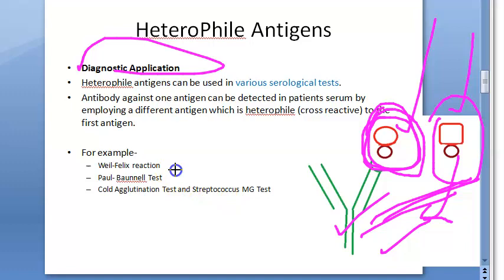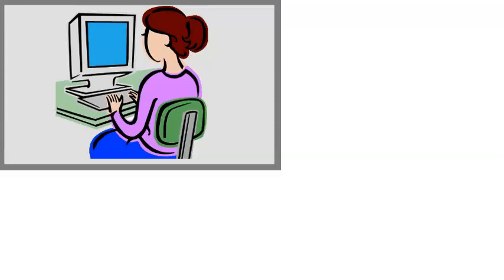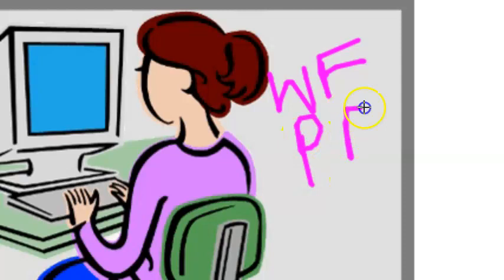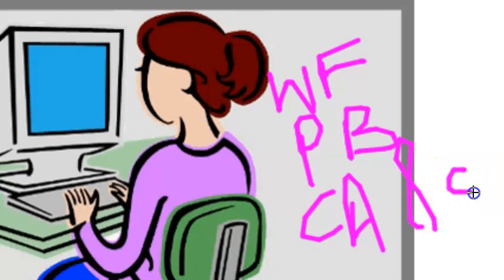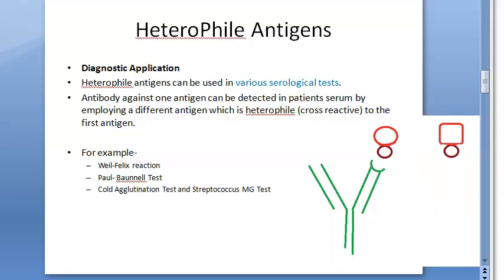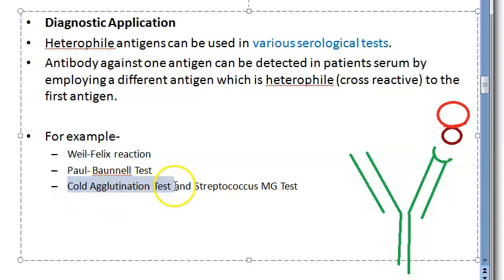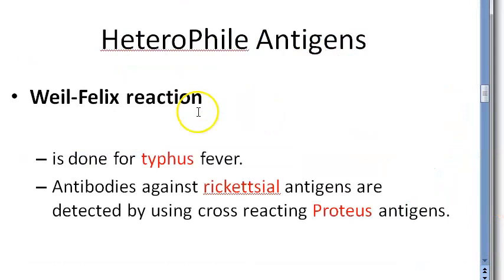The same principle is applied in the Weil-Felix reaction, Paul-Bunnell test, cold agglutination test, and Streptococcus MG test. These are the four examples of tests that use heterophile antigens.